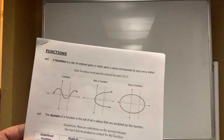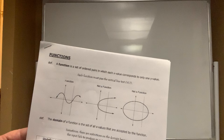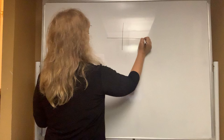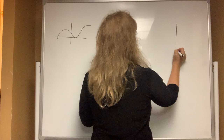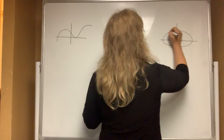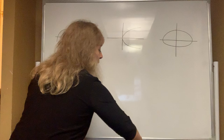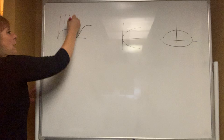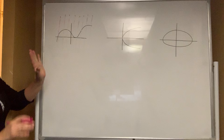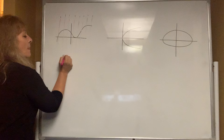Each function must pass the vertical line test — you're allowed to abbreviate that with VLT. If you can imagine an infinite number of vertical lines as if they're raindrops coming down, if each one of those lines only hits the function at most once, this is definitely a function.